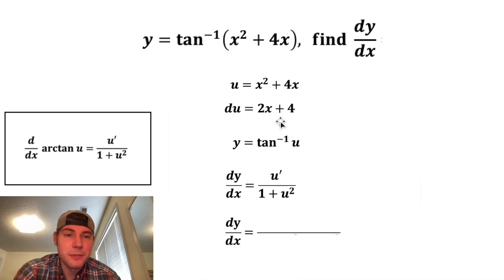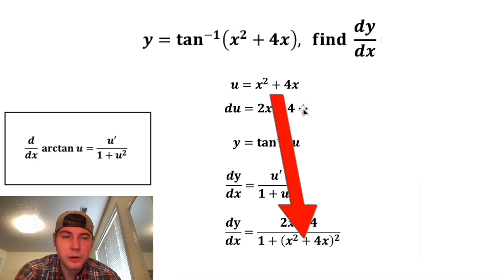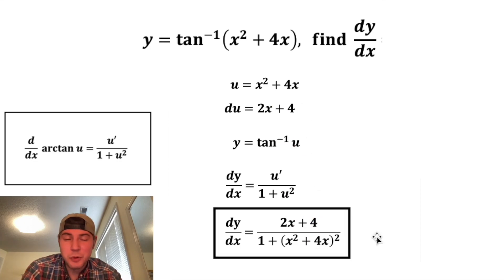So in the numerator, we have u prime, which is the same thing as du, so that's gonna be 2x plus 4. And in the denominator, we have 1 plus u squared, but u is this x squared plus 4x. And let's put a box around it.